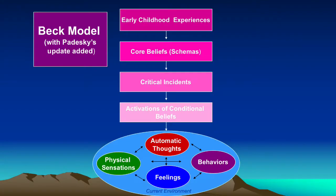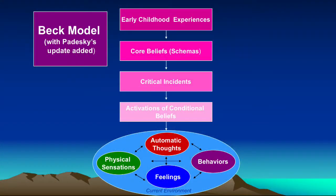The Beck model also includes the fact that we have early childhood experiences that lead to core beliefs and schemas — though core beliefs and schemas are not identical. Those core beliefs that we form in early childhood turn into conditional beliefs, sometimes called critical beliefs, and those are activated by our experiences, leading to our automatic thoughts.